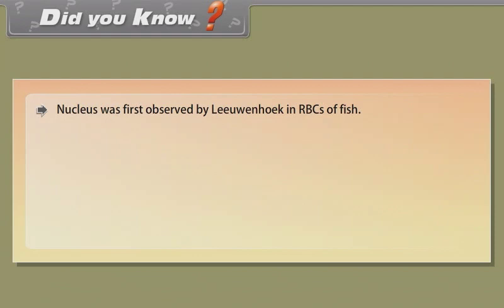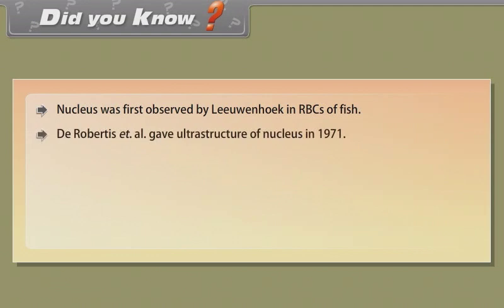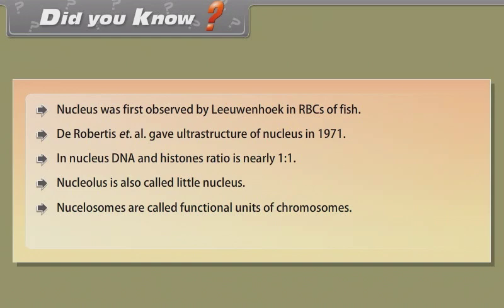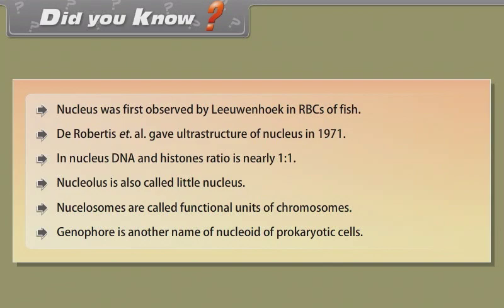Did you know? Nucleus was first observed by Leeuwenhoek in RBCs of fish. De Robertis et al. gave the ultrastructure of nucleus in 1971. In the nucleus, the DNA to histone ratio is nearly 1:1. Nucleolus is also called the little nucleus. Nucleosomes are called the functional units of chromosomes. Genophore is another name for the nucleoid of prokaryotic cells.